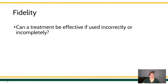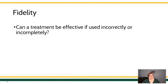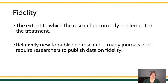The last topic is fidelity, sometimes called treatment integrity — the question of whether or not treatment was used as intended. How can treatment be effective if it was used incorrectly or incompletely? It's like taking an antibiotic: your doctor tells you to take the whole course, don't stop early even if you feel better — you have to use it with fidelity. Treatment integrity is the extent to which the researcher or professional correctly implemented the treatment plan. Relatively new research is being conducted here, so many experimental journals don't yet require researchers to publish fidelity data on how the independent variable was applied, even if they ask for reliability data on the dependent variable. But fidelity is super important.